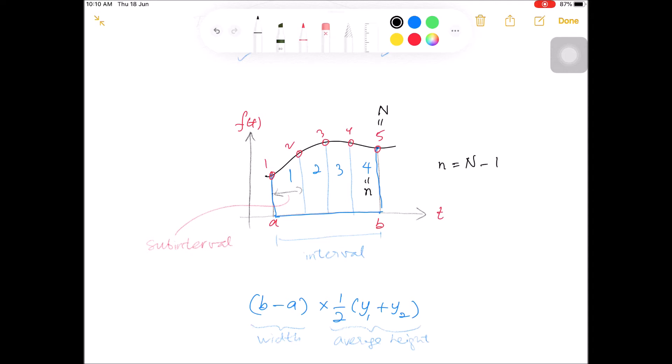So this individual trapezium is called a strip. So one trapezium is called a strip. And let us denote the width of the strip as H, which is equals to B minus A divided by small n.